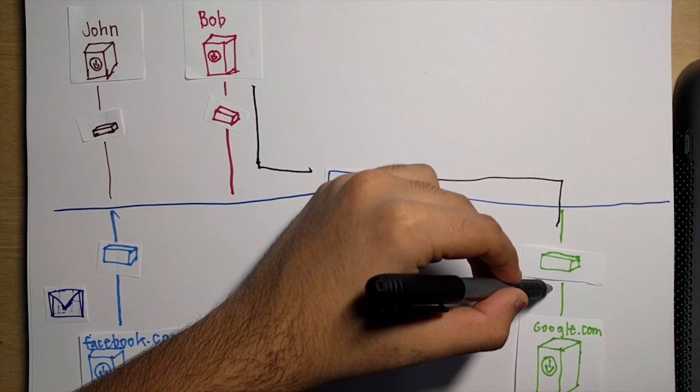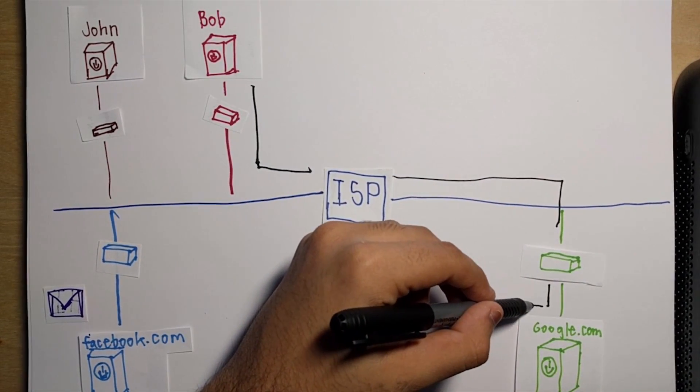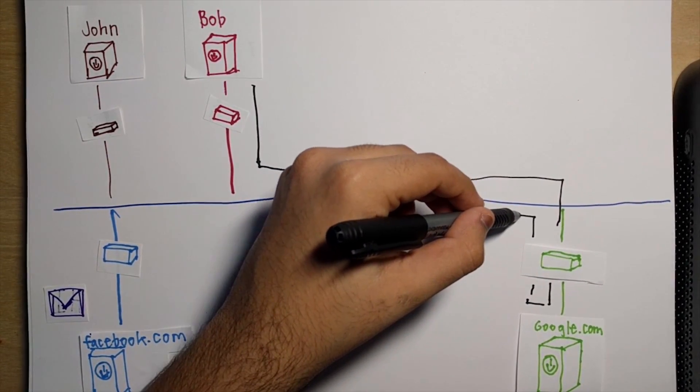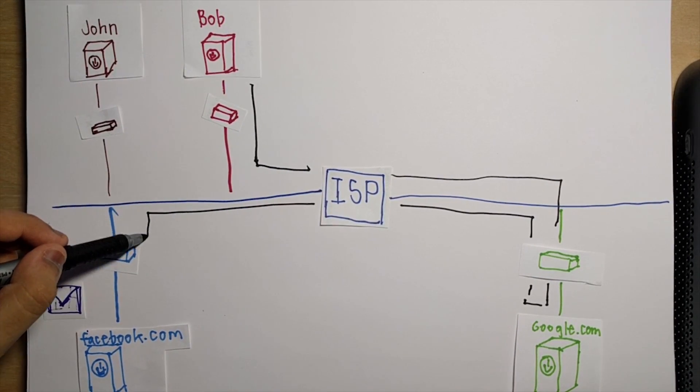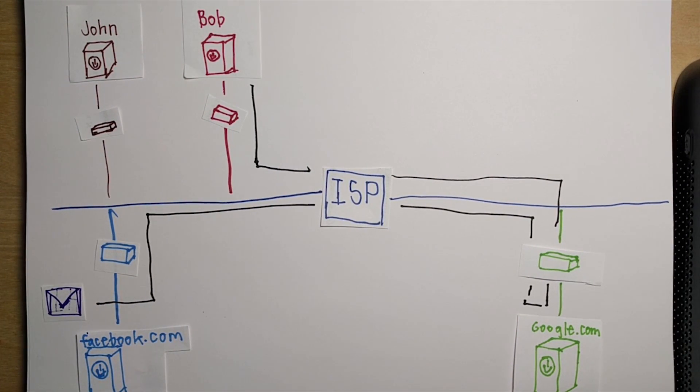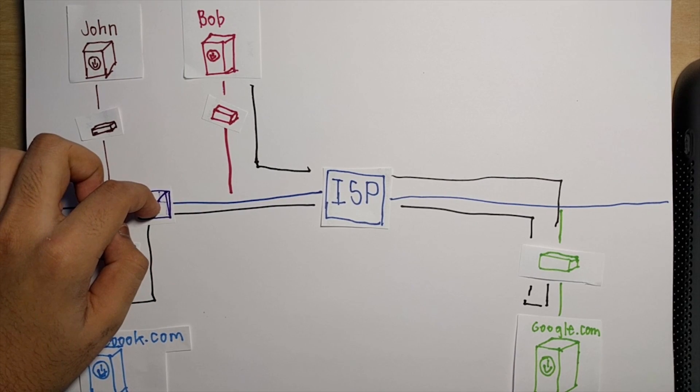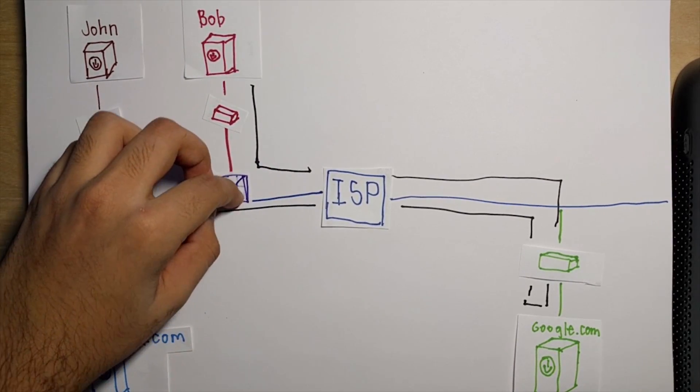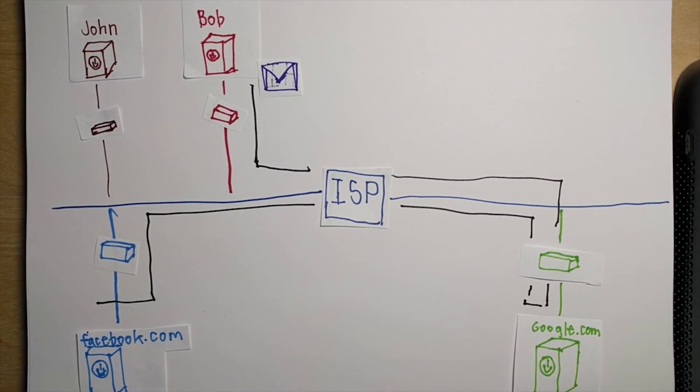He uses his POP to connect to the NAP, which connects to one of Google's POPs, and finds his Facebook profile. Then that POP redirects him back to the NAP, toward Facebook's POP, where the image is broken into packages and sent back to Bob where it's reassembled and he sees it.